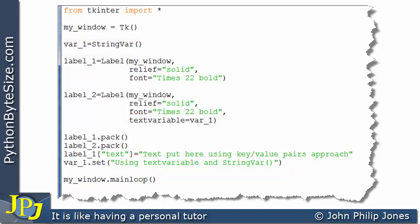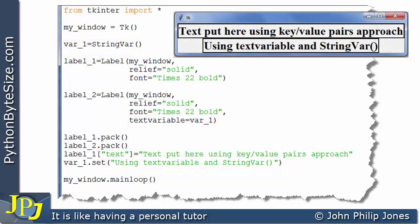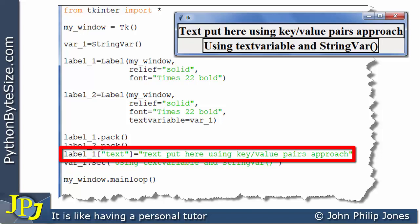So let's see this program executing. And this is the runtime. And if you look at label 1, you can see in it that is the text, text put here using key value pairs approach. And look at the code, and that was achieved with this line of code, which used the key and the value arrangement.